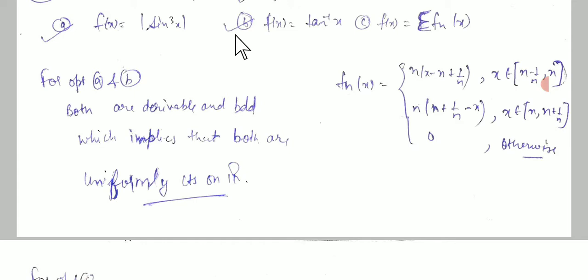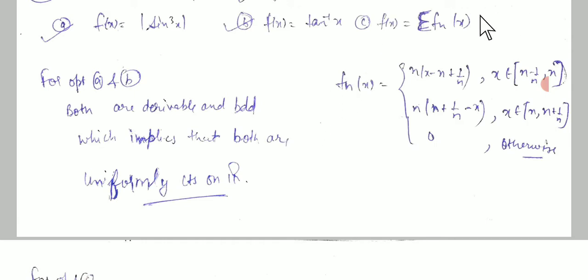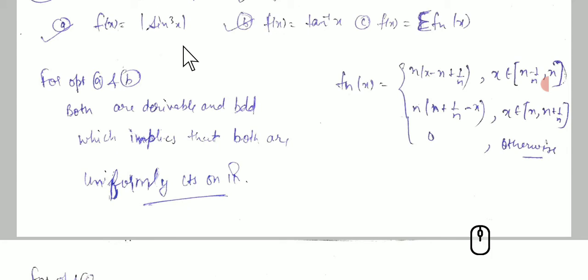How do we determine uniform continuity from a graph? If a graph has a vertical asymptote — that is, a portion parallel to the y-axis — then the function is not uniformly continuous. But for both sin³x and tan⁻¹x, their graphs are not parallel to the y-axis anywhere, so both functions are uniformly continuous.